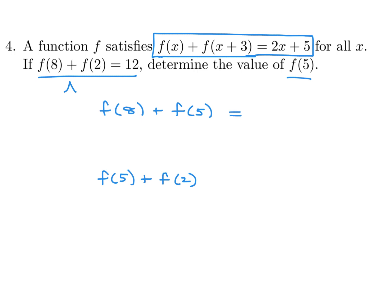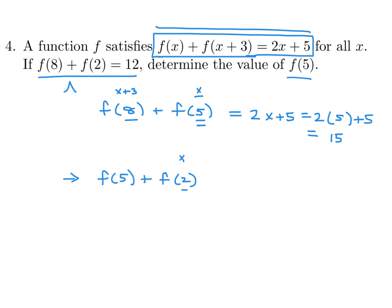In this case, x is 5 and x plus 3 is 8. So 2x + 5 would be 2 times 5 plus 5, which is 15. Now let's turn our attention to f(2) + f(5). Here x is 2 and x plus 3 is 5. So 2x + 5 with x equal to 2 gives us 9.